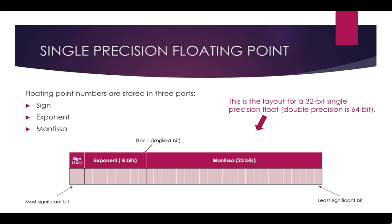Floating-point numbers are stored in three parts: the sign, the exponent, and the mantissa. The sign is one bit — a 0 means it's a positive number and a 1 means it's a negative number. The exponent takes up 8 bits and the mantissa takes up 23 bits, making 32 bits total for a single precision float. A double precision floating-point number has 64 bits. The most significant bit is on the left — if that digit changes it has the most significant effect on the number — while the least significant bit on the far right changes the number the least amount.